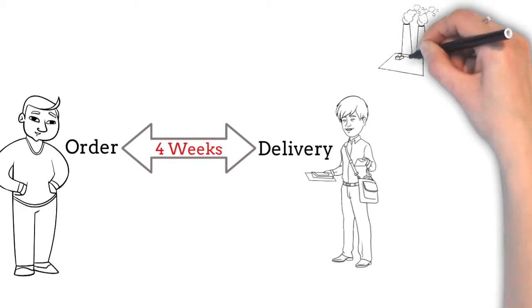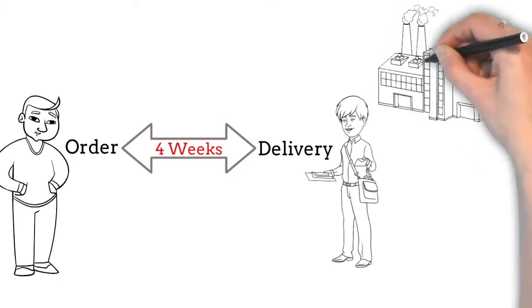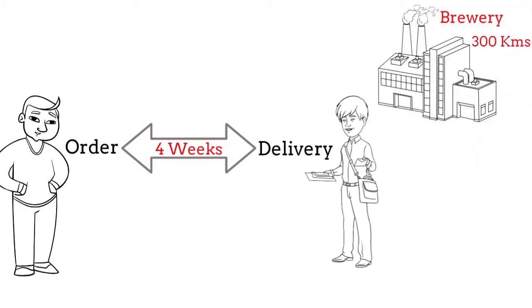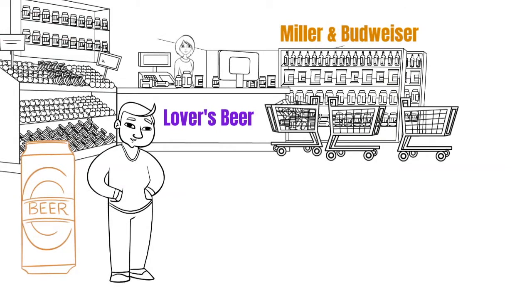It was simply so because the distributor would further place the order to the brewery which was around 300 kilometers away from his location, and it would take nearly 4 weeks for the supply to come from the factory. The business was going fine and the sales of beers were steady as it's always been during this time of the year.